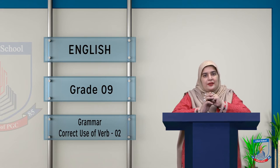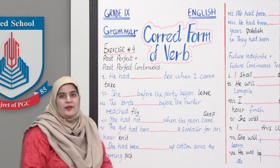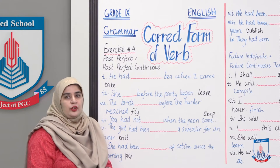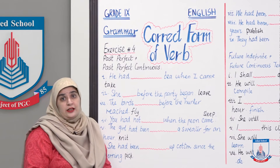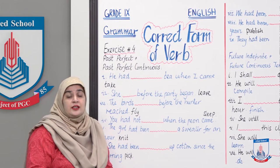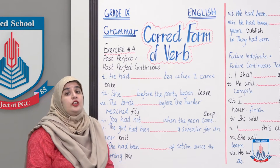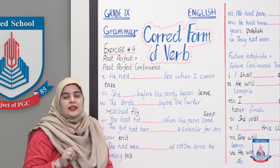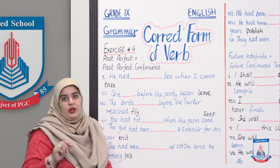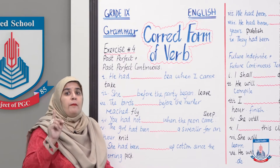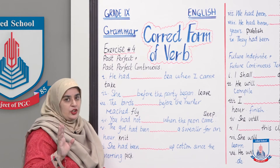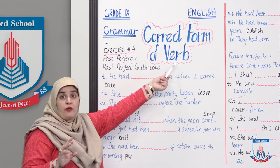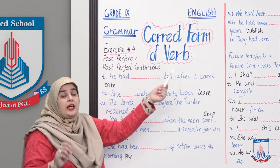So without further ado, let's start our lesson. The board is telling you that we are going to do Exercise 4, which is related to the past perfect and the past perfect continuous tense. What is the identity of past perfect tense? The presence of 'had'. Or past perfect continuous tense — 'had been' — lagawa hoga. The spelling of 'been' is B-E-E-N. So Exercise 4 is about putting in the correct form of verb.